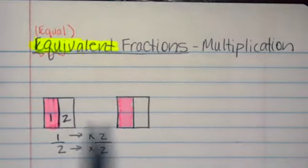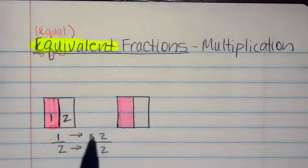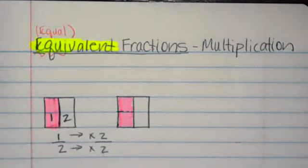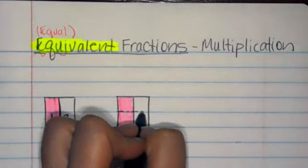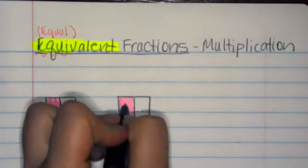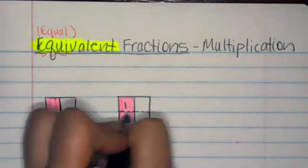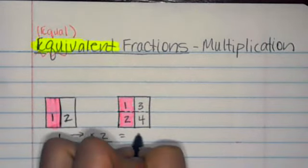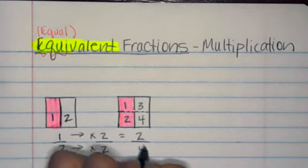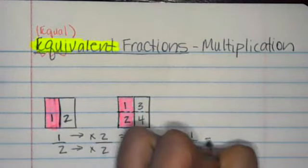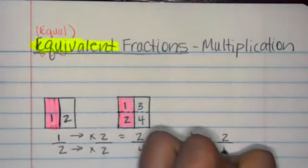As you see here, again, we have one half, but we're going to multiply the one by two. So one times two equals two. And then this one also goes into two parts. One, two. Two times two is four: one, two, three, four. So we have two parts out of four. Our equivalent fraction to one half is two fourths. So one half is equivalent to two fourths.